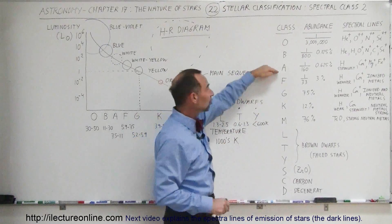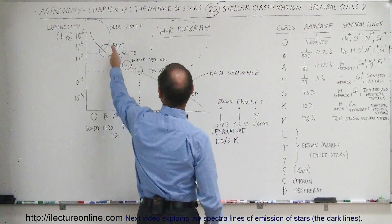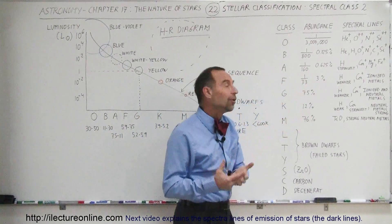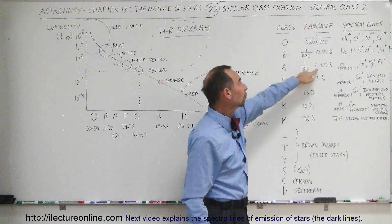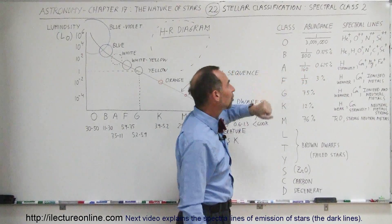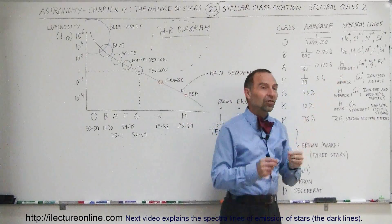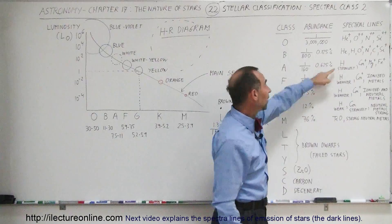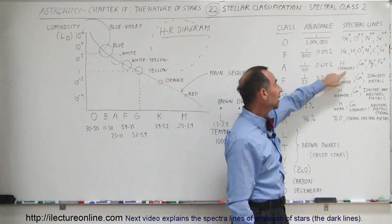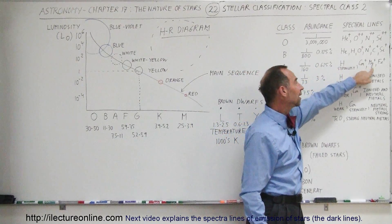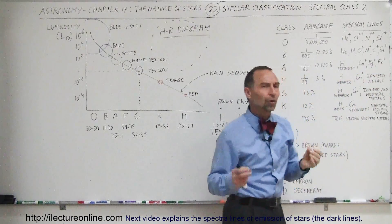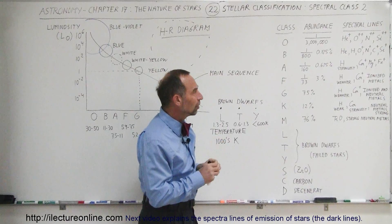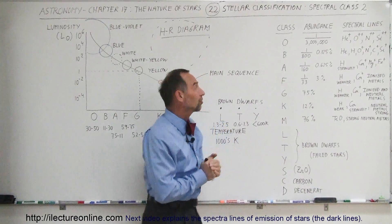Then we have the A-class stars — the white stars like Sirius. Their abundance is almost 1%, about two-thirds of a percent of all stars. This is where we find the hydrogen lines to be the strongest; the most recognizable hydrogen lines are found in A-class stars. We also find ionized calcium, ionized magnesium, and ionized iron in their spectrum, which tells us we're looking at an A-class star.